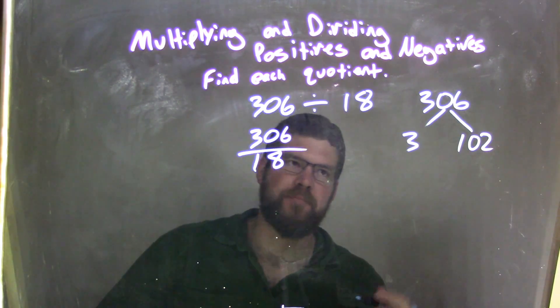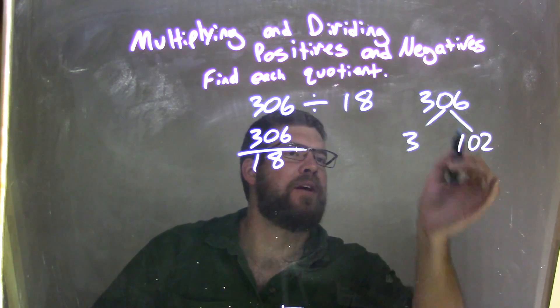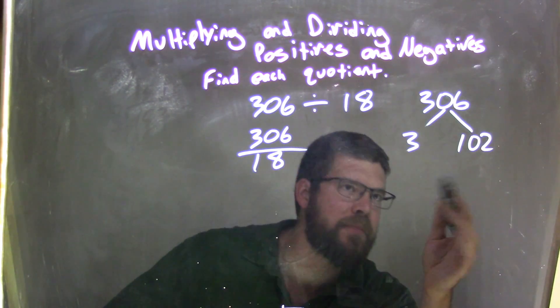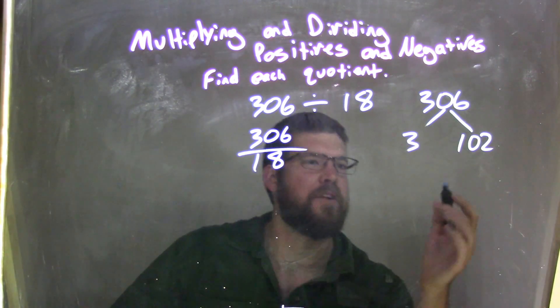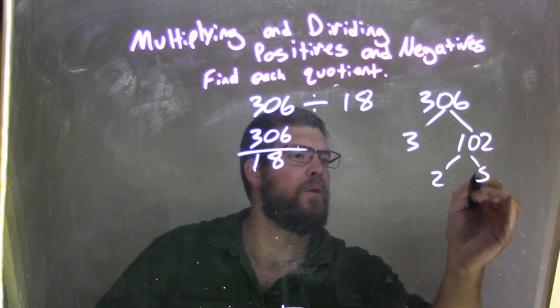So, 102. Can I break that down? Well, that's an even number. That's 2. So, 2 and 51. 51, I've dealt with a few times now. 3 goes into 51.